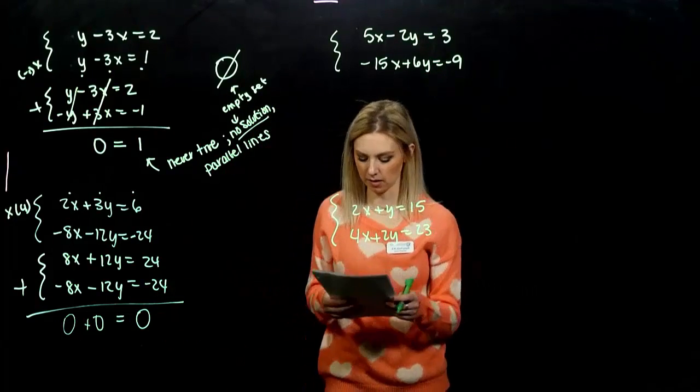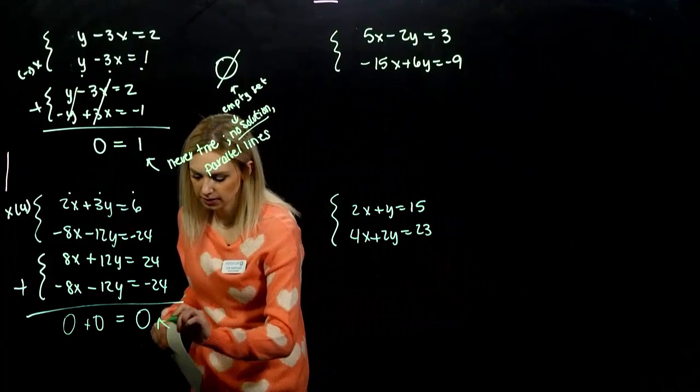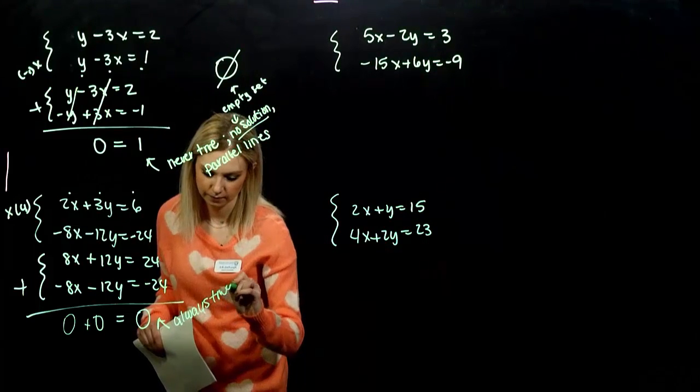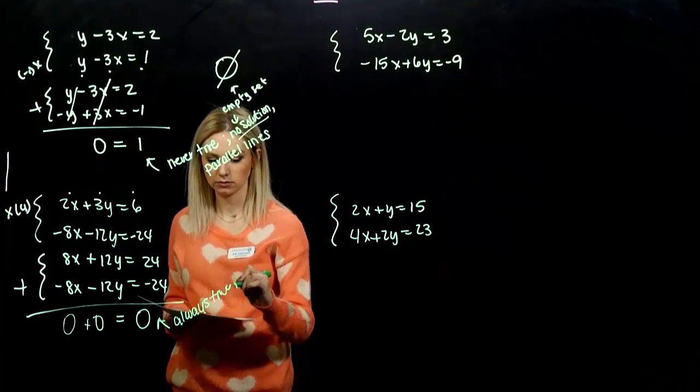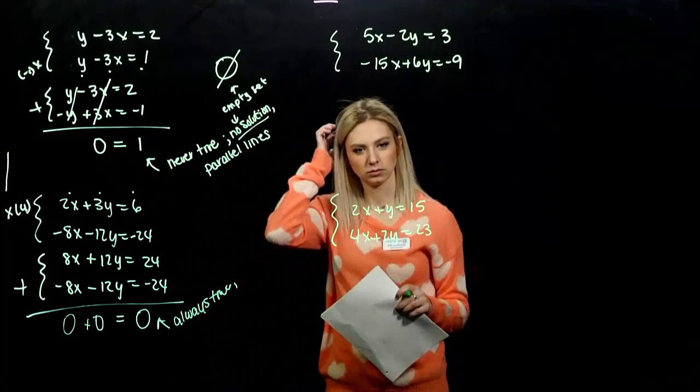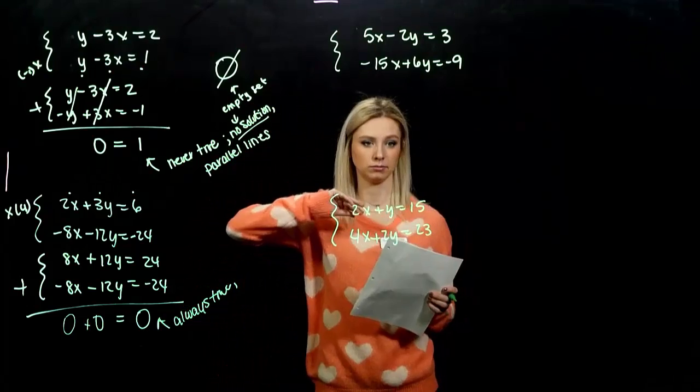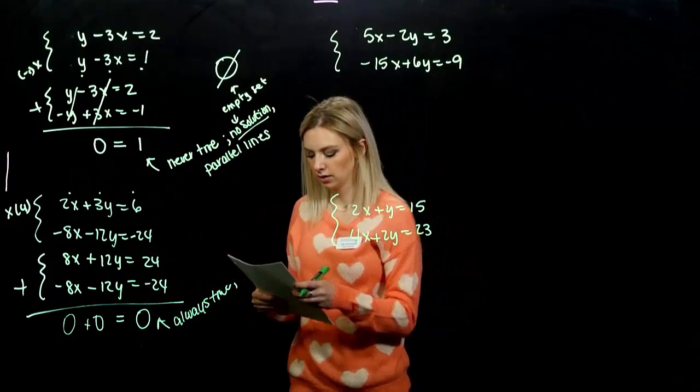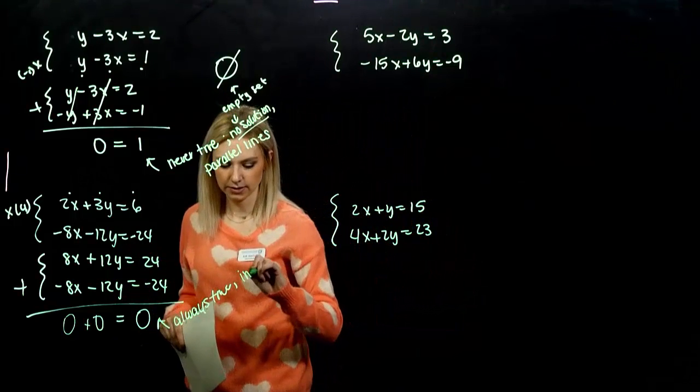So, can I have zero be equal to zero? Yeah, I can always make that be true. This is always true. So, what does that mean? Does it matter what I plug in? No, because I'm always going to come down to this true statement. So, we have infinitely many solutions.